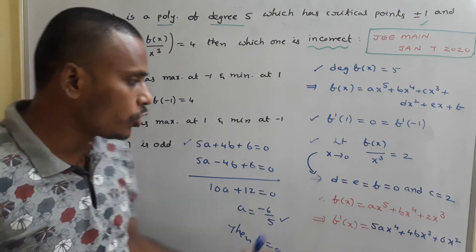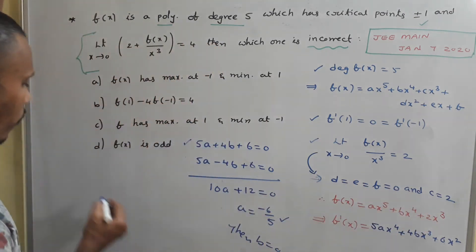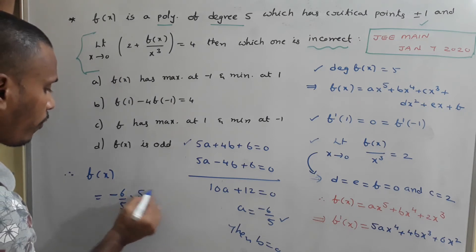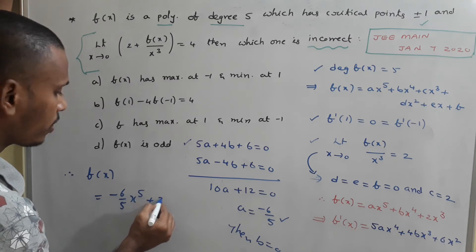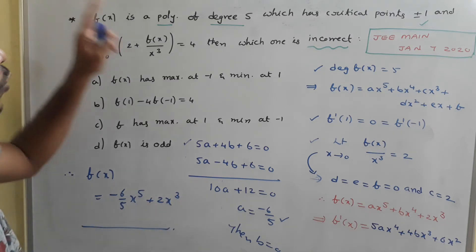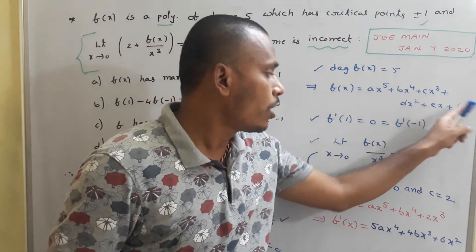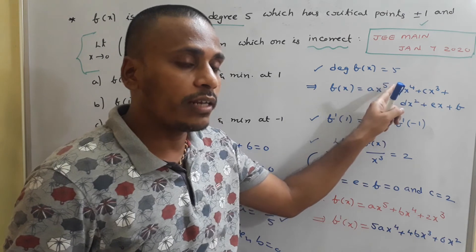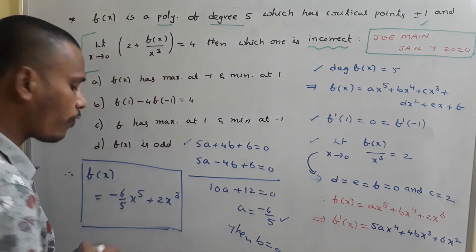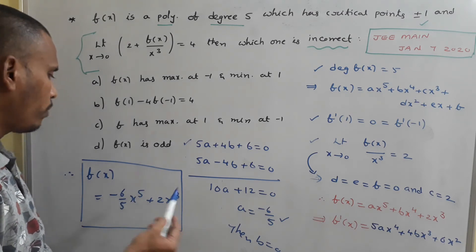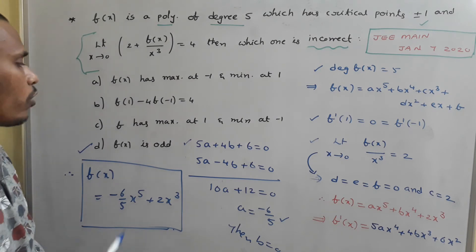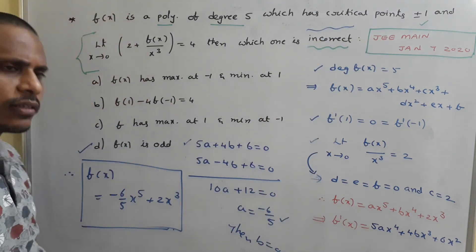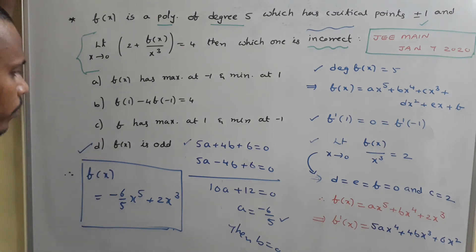So the final polynomial is f(x) = −(6/5)x⁵ + 2x³. Since f(x) contains only odd powers x⁵ and x³, f(x) is clearly an odd function. Now we need to check the given options to identify the incorrect one.